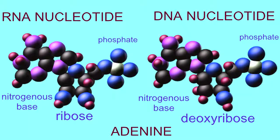RNA and DNA nucleotides of adenine are identical in their phosphate groups and nitrogenous bases. However, they differ in their sugar.